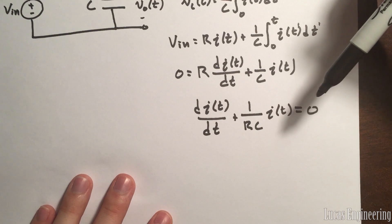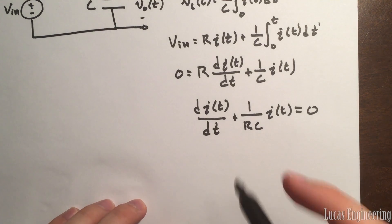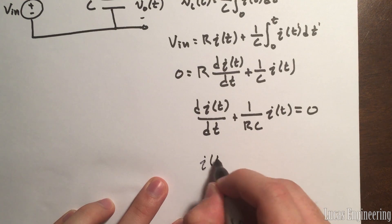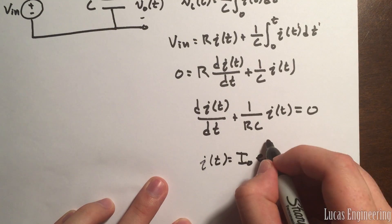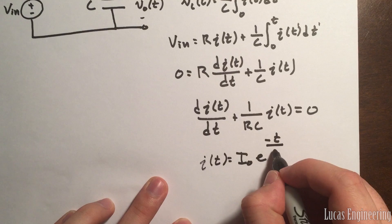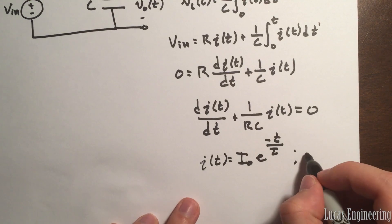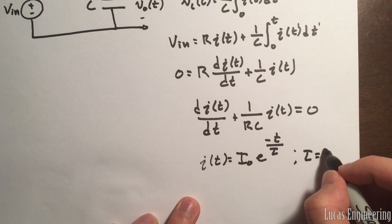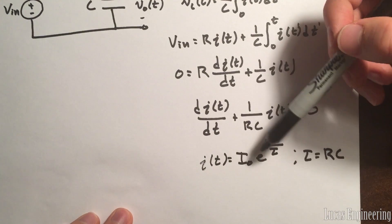Solving this would take some time, but from differential equations you know the answer. The solution is I(T) = I₀·e^(-T/τ), where τ is the time constant and τ = R·C.